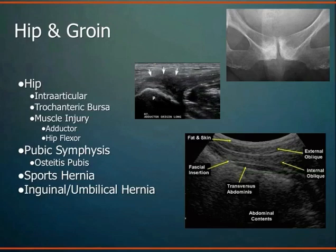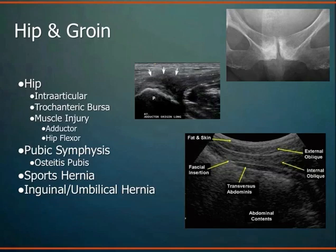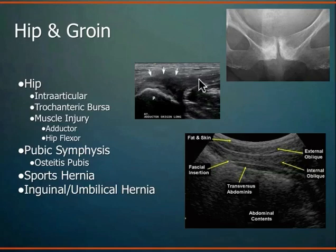The hip and groin is another area where ultrasound is being used more, especially in sports, for intraarticular injections — avoiding fluoroscopy and radiation exposure. More superficial diagnoses include trochanteric bursitis, one of the most common hip complaints, which is a very easy injection to do under ultrasound guidance. Also muscle injury: an adductor muscle tear with associated adductor tendon shows collection of hematoma, tissue disruption, and retraction of tissue in the area of tear.